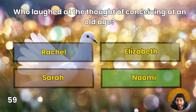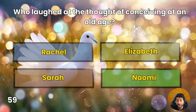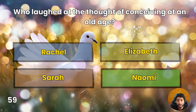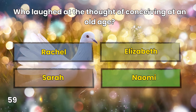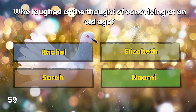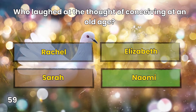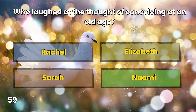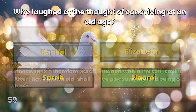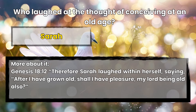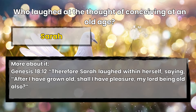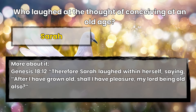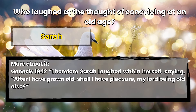Question 59: Who laughed at the thought of conceiving at an old age? Rachel, Elizabeth, Sarah, or Naomi? Sarah. Genesis 18:12 — Therefore Sarah laughed within herself, saying, 'After I have grown old, shall I have pleasure, my lord being old also?'